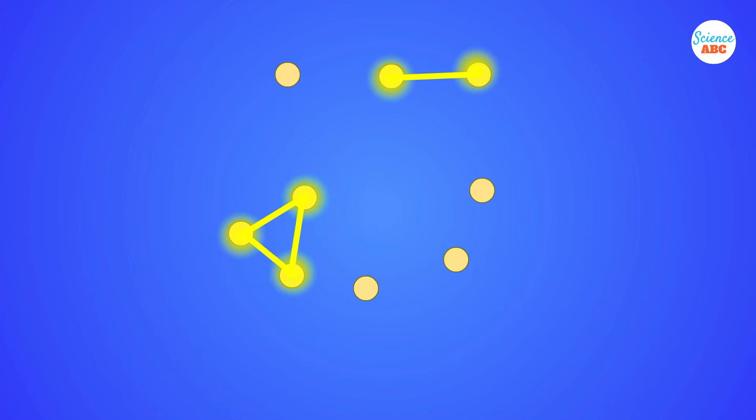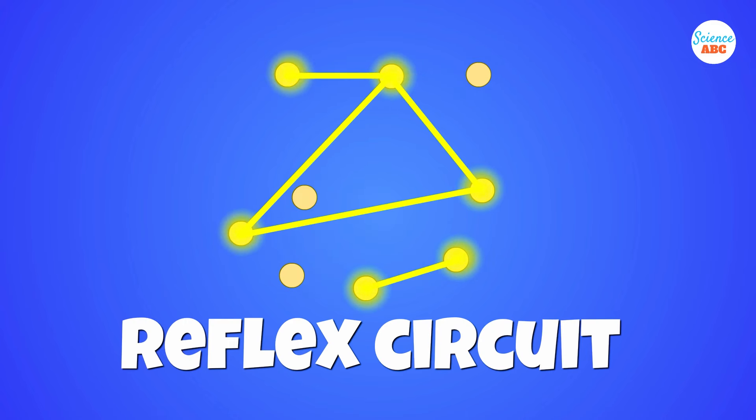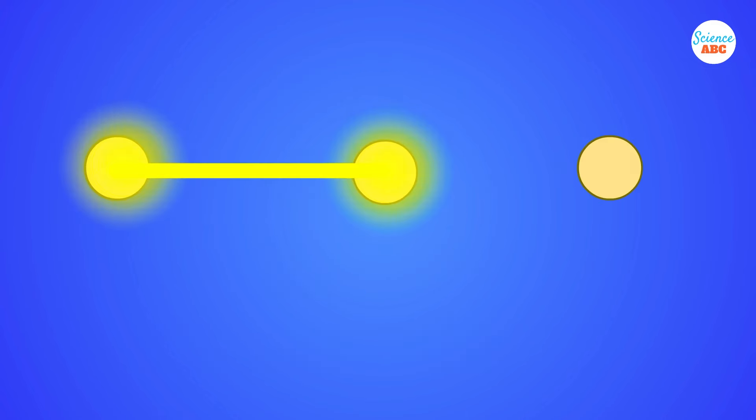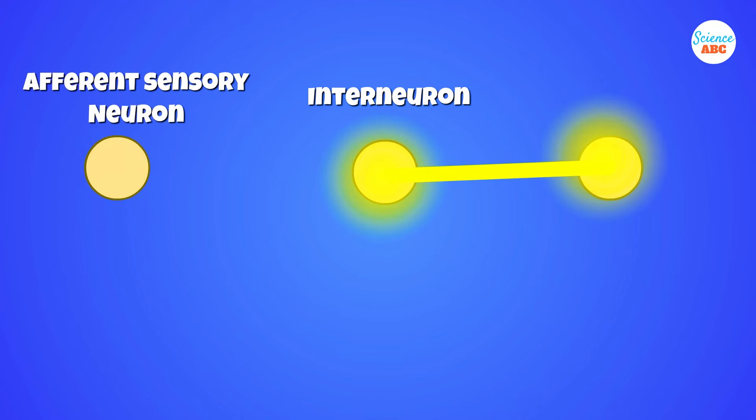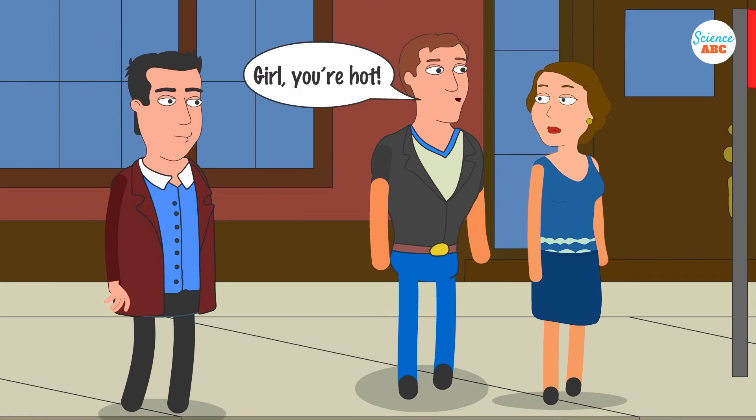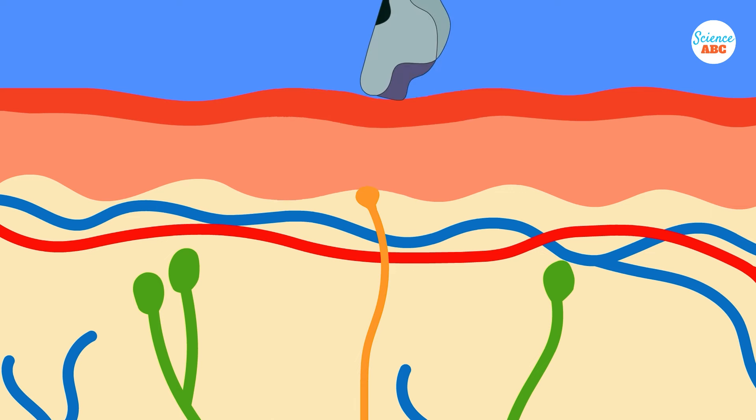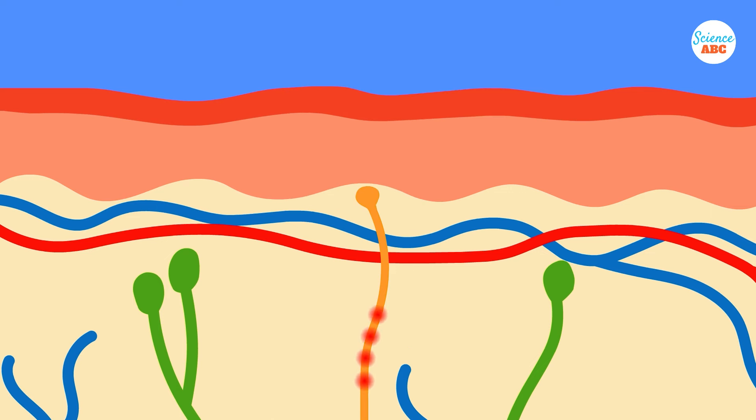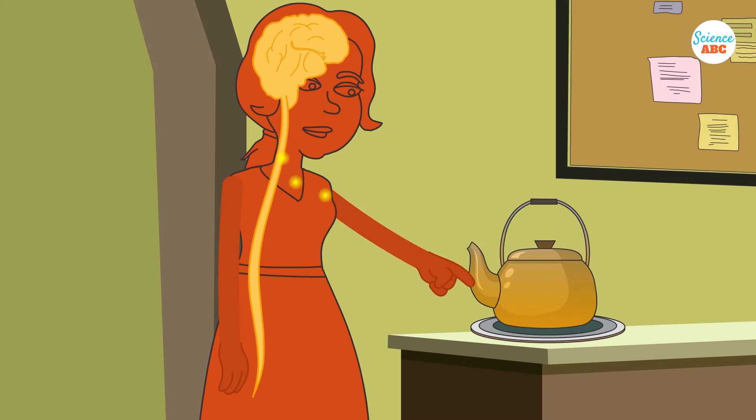One of the easiest neural circuits to understand is the reflex circuit, which only requires three neurons: the afferent sensory neuron, the interneuron, and the efferent neuron. Consider this classic example. Imagine that you touch something hot. Sensory neurons in your skin will sense the heat and transmit that signal to a neuron in the spinal cord.